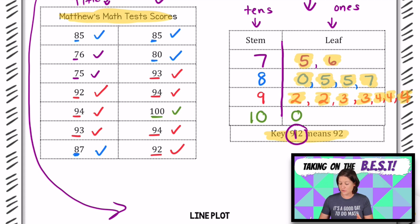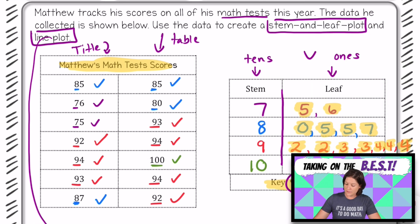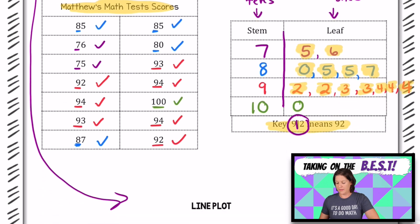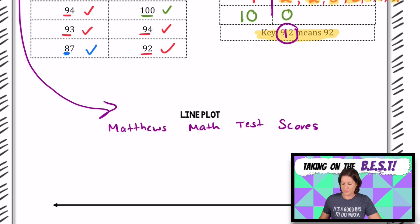You know what? I forgot a very important piece before we move on, and that is to place a title. Even though we know that the title of all the information was Matthew's test scores for the table, we also need to write it up here. So just write Matthews Math Test Scores. And then as we come down to our line plot, let's go ahead and put our title up here. When you're ready, let's get going.